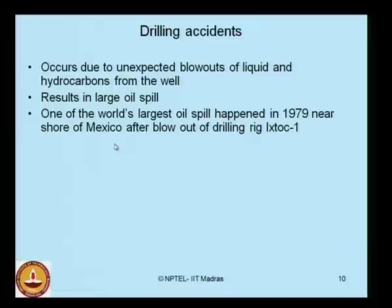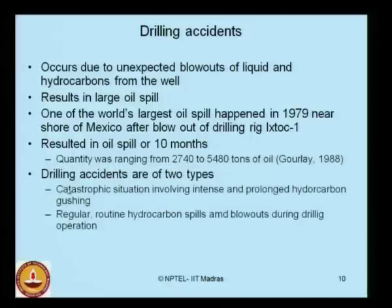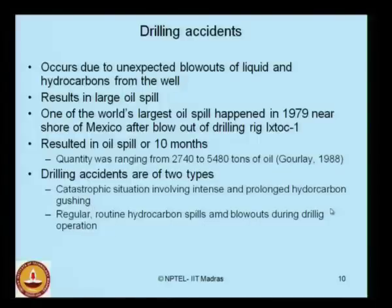One of the world's largest oil spills occurred in 1979 near the shore of Mexico after the blowout of drilling rig Ixtoc 1. It resulted in an oil spill lasting about 10 months, with the quantity of oil spilled ranging from 2,740 to 5,480 tons — a very large volume and an irreversible process. Drilling accidents in literature are categorized as: catastrophic situations involving intense and prolonged hydrocarbon gushing, and regular routine hydrocarbon spills and blowouts during drilling operations.